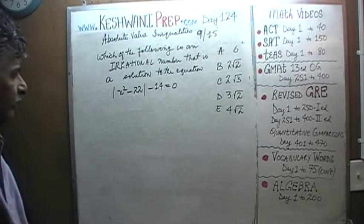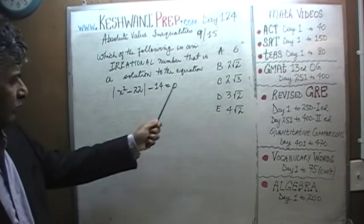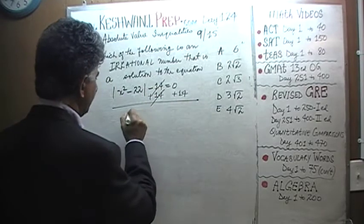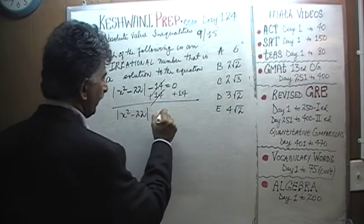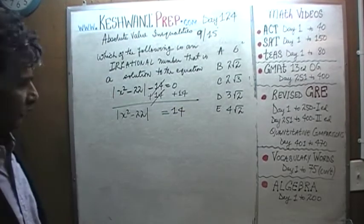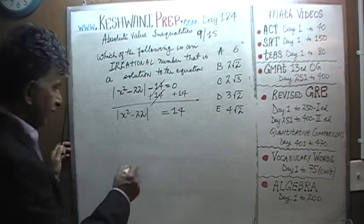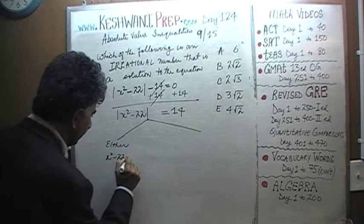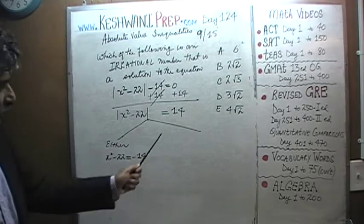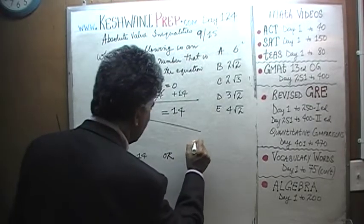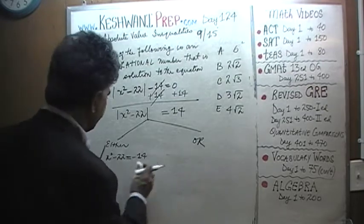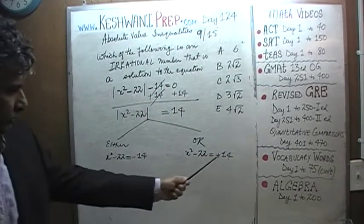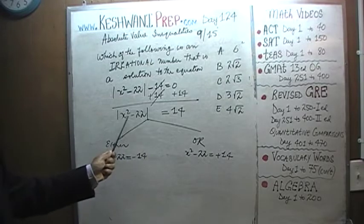Alright, here we go. First thing first: we need to bring the negative 14 to the other side. Let's add 14 to both sides. The negative 14 drops out, and we find that absolute value of x squared minus 22 must equal 14. Since the absolute value of this quantity equals 14, that tells us two possible cases.